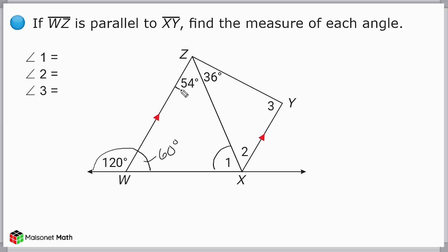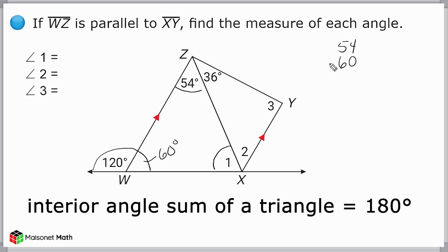Because we have this angle, 54, and we know that this angle is 60, and we know that the third angle of any triangle must add to the other two to equal 180 degrees.